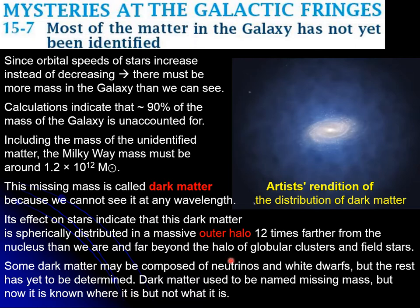This mass could in principle be composed of things that are not easy to detect, like neutrinos or white dwarfs. But still, there is no strong argument to believe that it is only neutrinos and white dwarfs. Dark matter used to be called missing mass, but now that we know it's got to be there, it's not missing — except that we cannot see it. We even know the distribution that it has. And we're talking about our own galaxy, the Milky Way, and the dark matter that should surround it — but this happens with all galaxies also.